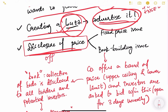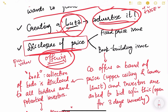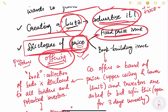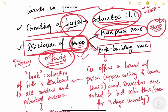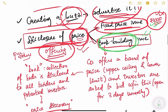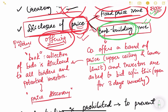Finally, once the IPO is declared, the price is disclosed — the price at which it is offering the share. This is the offer price, also known as the par value or face value. There are two ways of disclosing the price. One is a fixed price issue, where the company declares a specific price — for example, one share at rupees 1000. The other, which is the most commonly used method, is the book building issue.